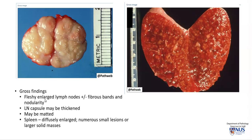Grossly, the lymph nodes are usually fleshy and large. There may be fibrous bands which appear whitish, and also nodularity, and we can see this appearance here with the very nodular, enlarged lymph node. This nodularity and fibrous bands are usually seen in the nodular sclerosis type of Hodgkin lymphoma, which is the commonest subtype. Also, the lymph node capsule may be thickened, and the nodes may be matted, as we saw in the gross pathology specimen.